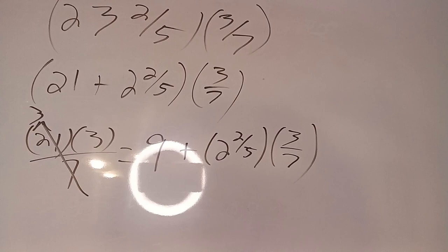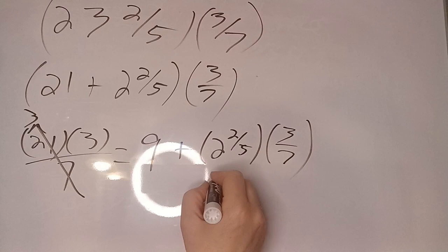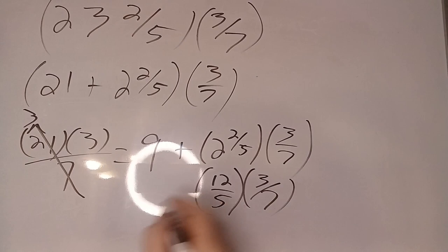Okay, so now we can do the whole improper fraction multiplying business. 2 times 5 is 10 plus 2 is 12. So we have 12/5 times 3/7. That gives us 36/35.